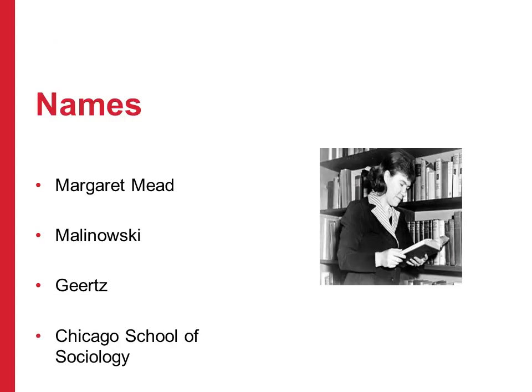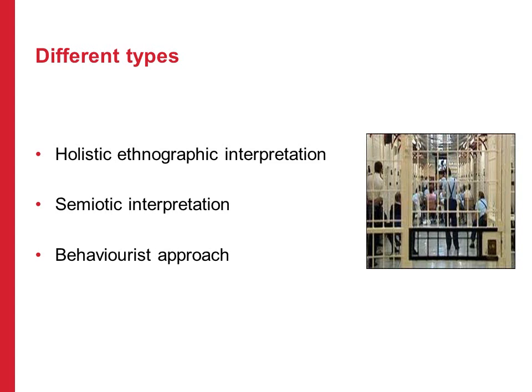Some names you might come across in your reading on ethnography are Margaret Mead, Malinowski, Geertz, and the Chicago School of Sociology. As with the other methodologies, there are different types of ethnography: holistic ethnographic interpretation, semiotic interpretation, or a behaviourist approach.